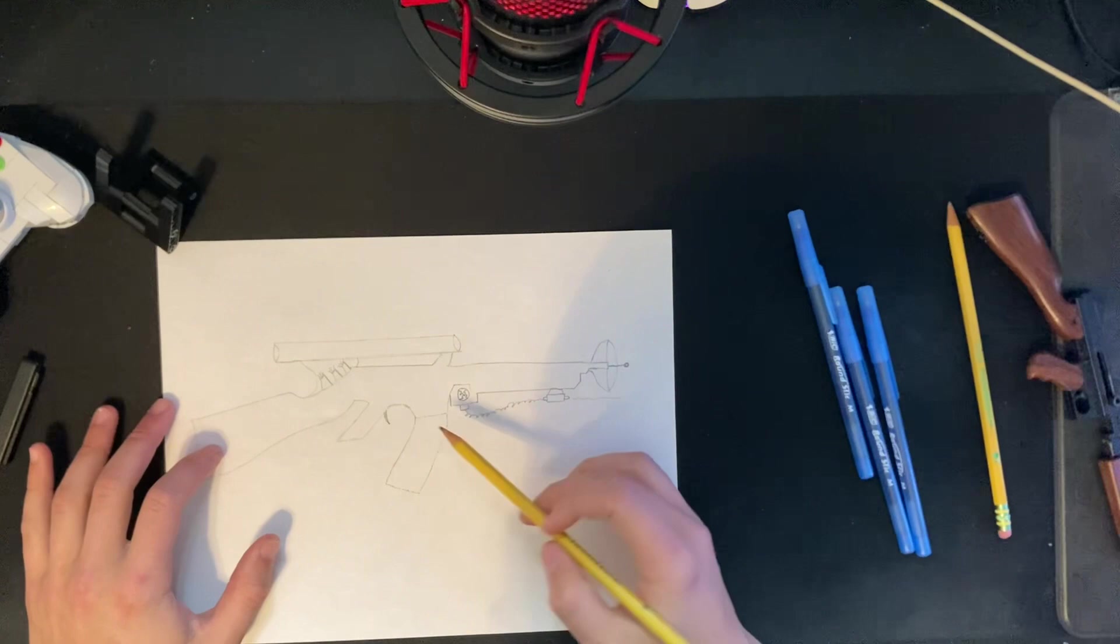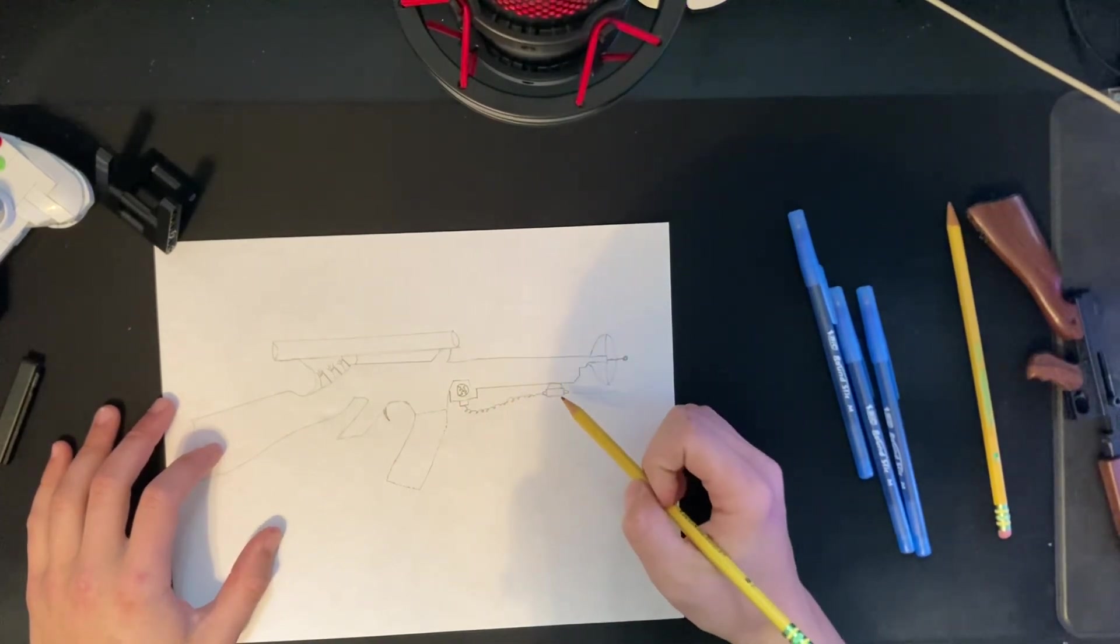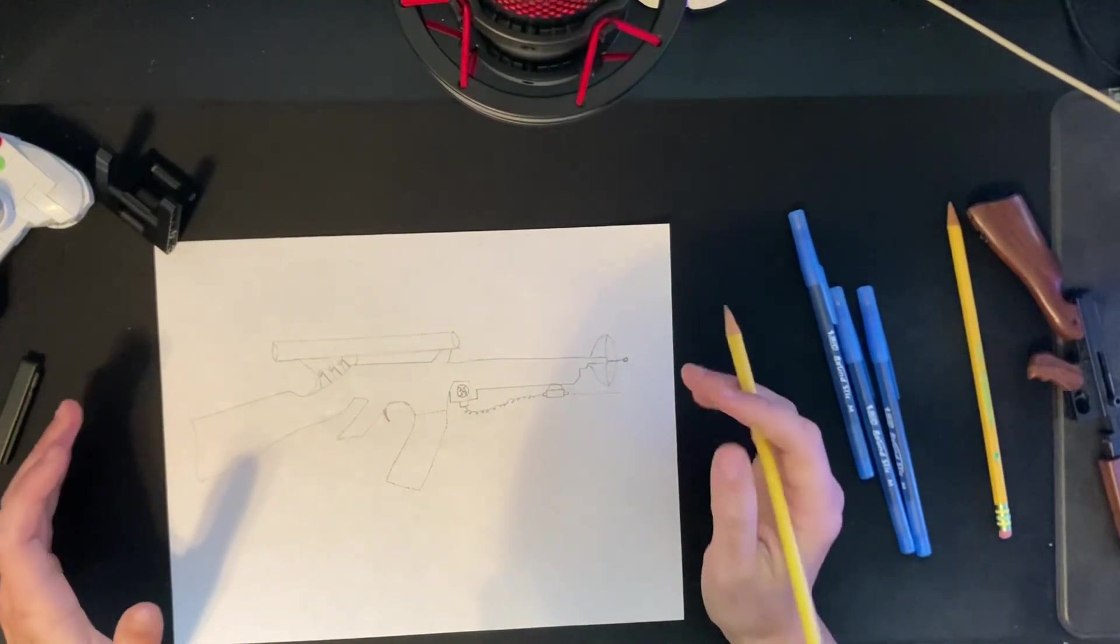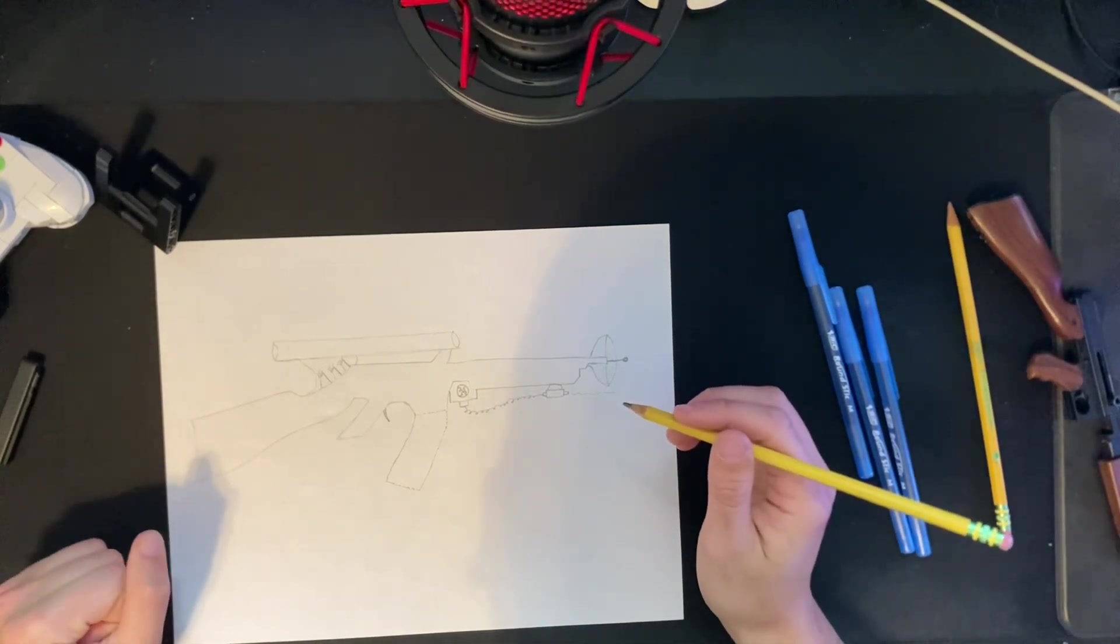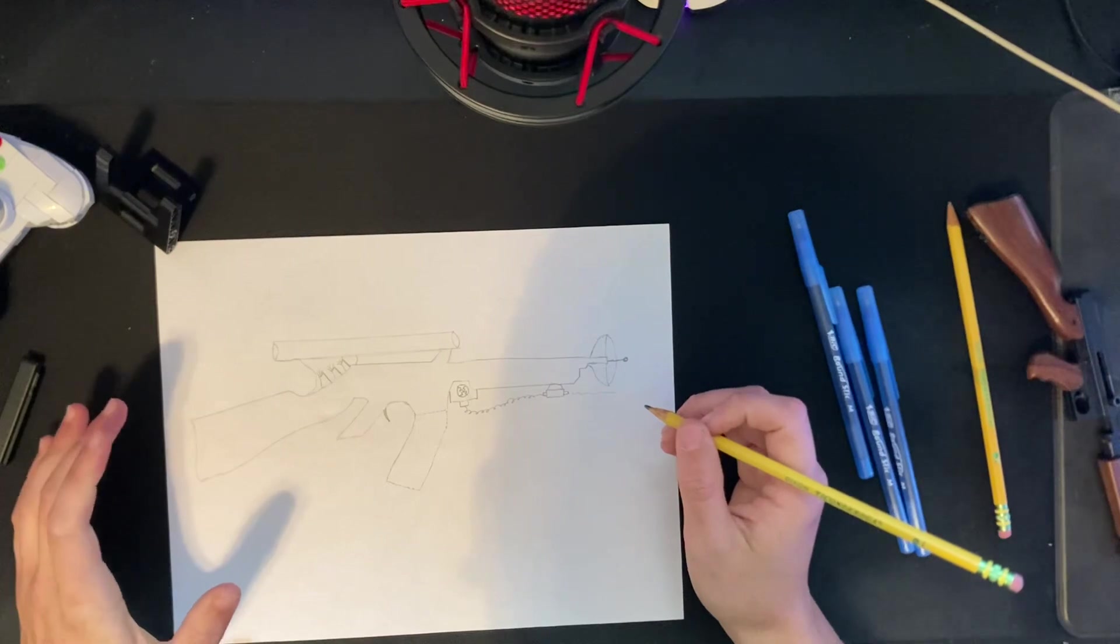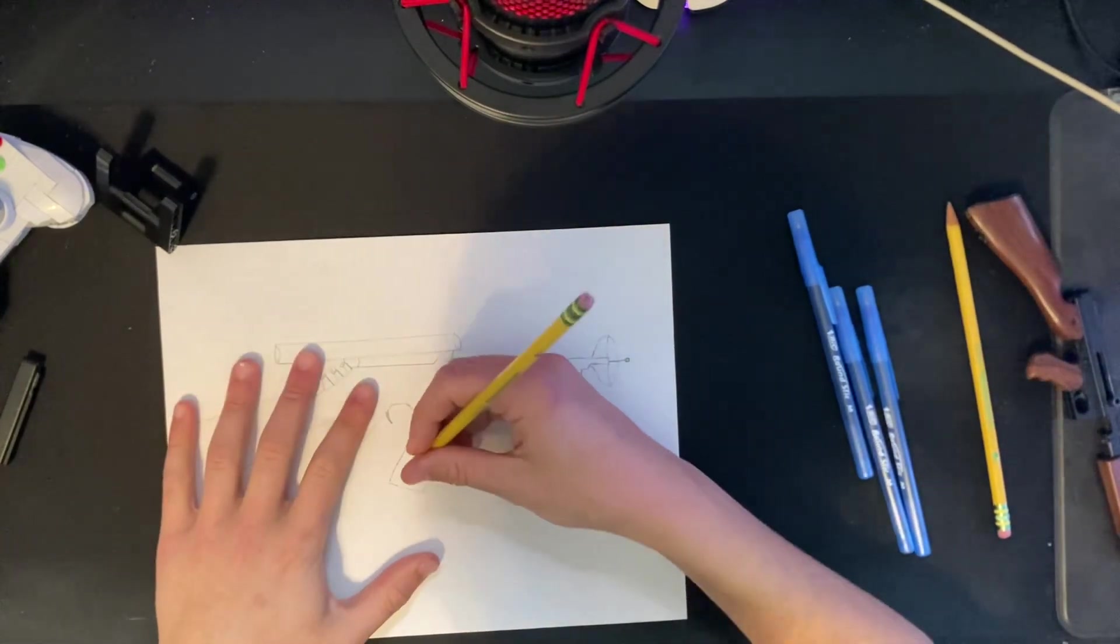So we got the stock, the grip, the magazine, the scope, the laser, the front. Now the best part is going to happen now - we gotta add details within this rifle. Let's start off with the magazine.